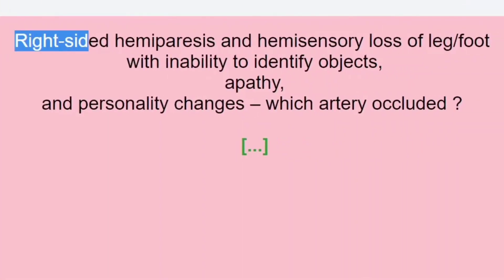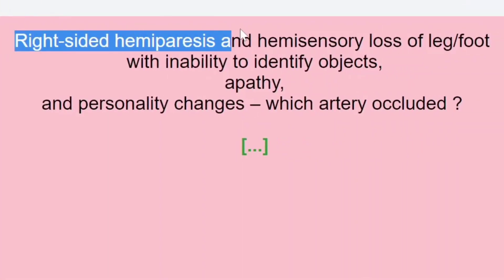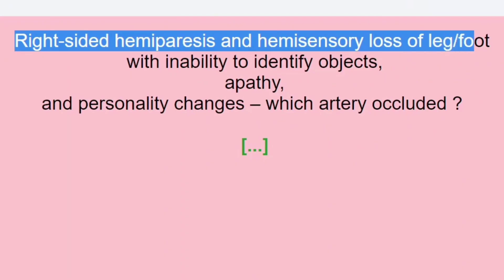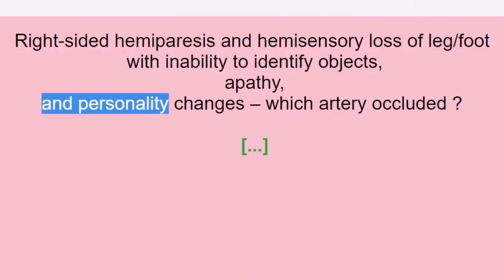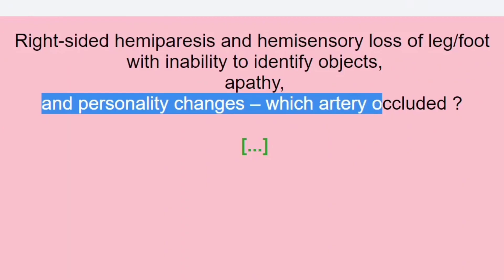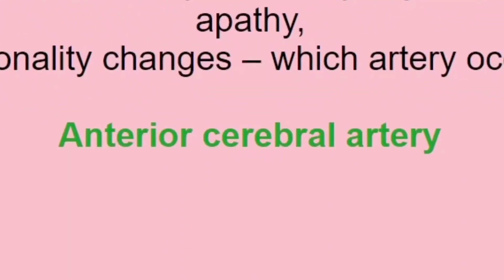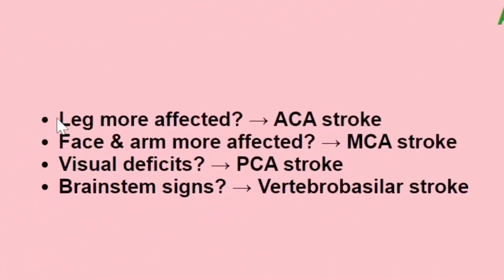For example, look at this question: right-sided hemiparesis and hemisensory loss of leg and foot, with inability to identify objects, apathy and personality changes — which artery is occluded? The answer is anterior cerebral artery. It's not enough to just memorize this specific fact. We should also note the context — out of all these symptoms, which one helped us in making this diagnosis, and what about other arteries?